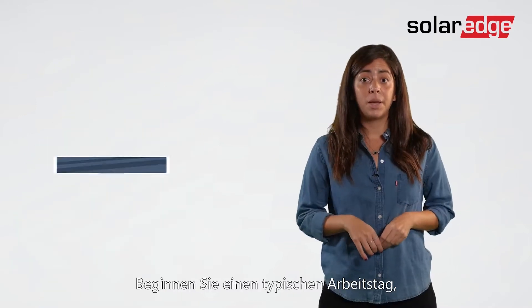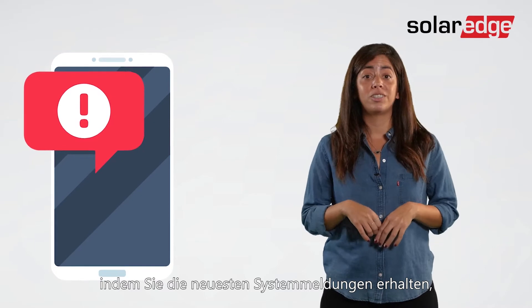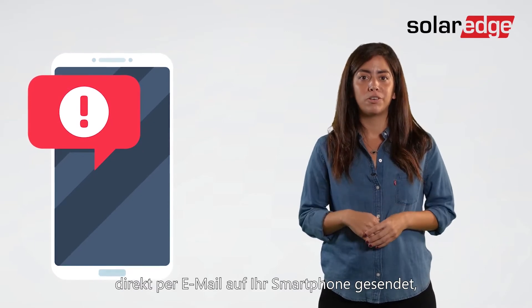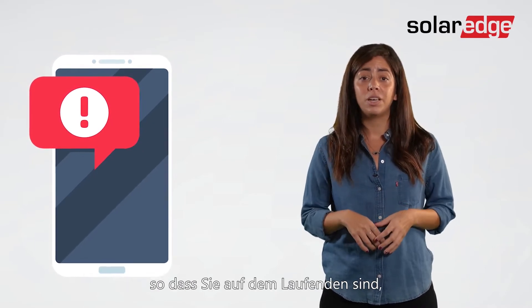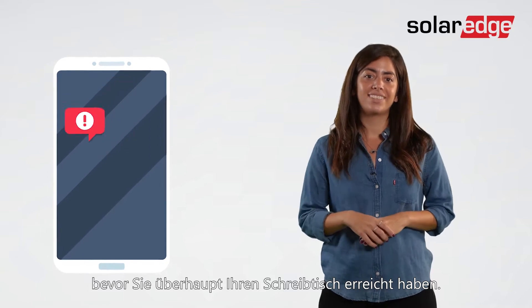Start a typical workday by getting the latest system alerts emailed directly to your smartphone, so you're up to speed before you've even reached your desk.